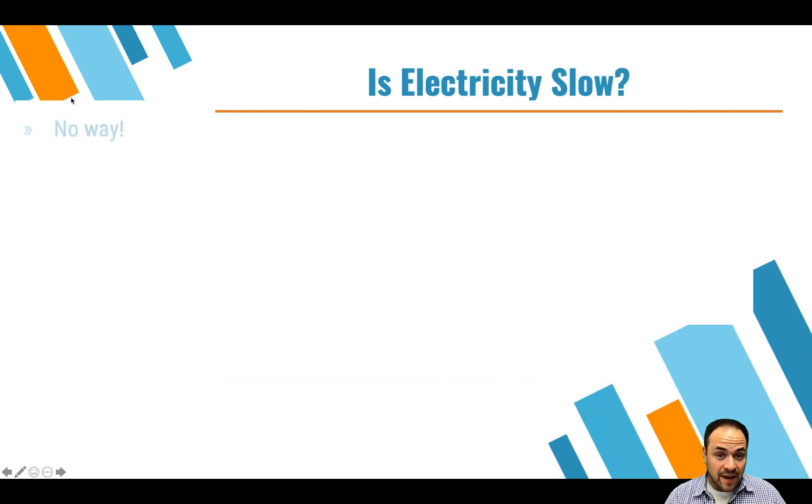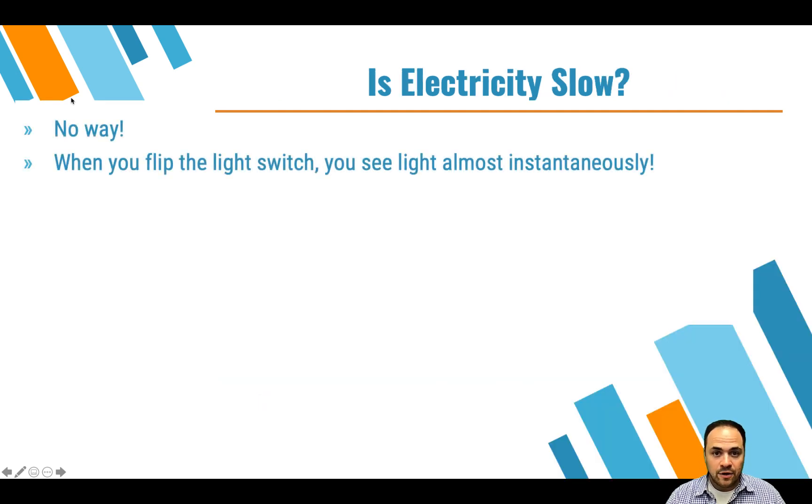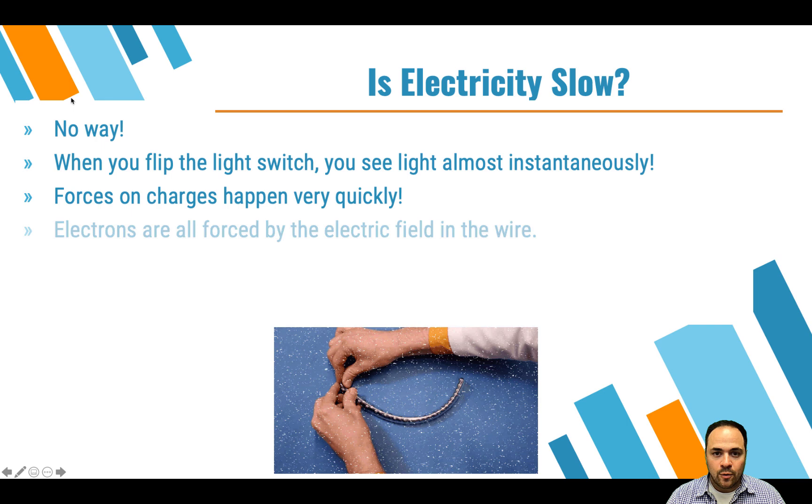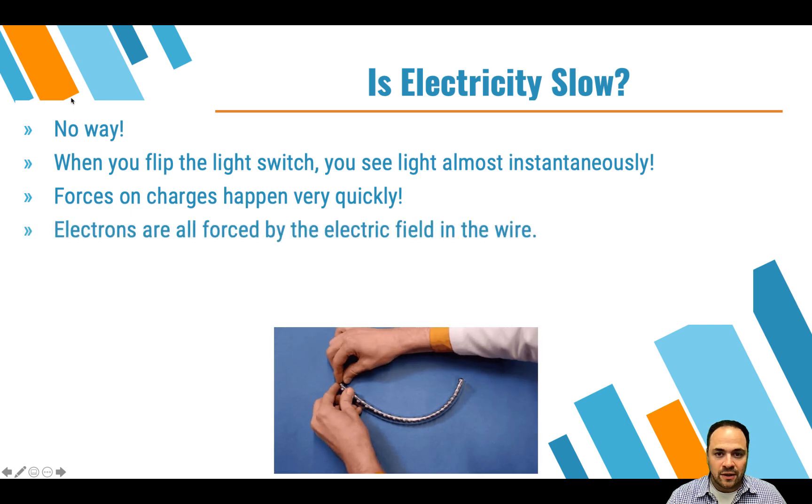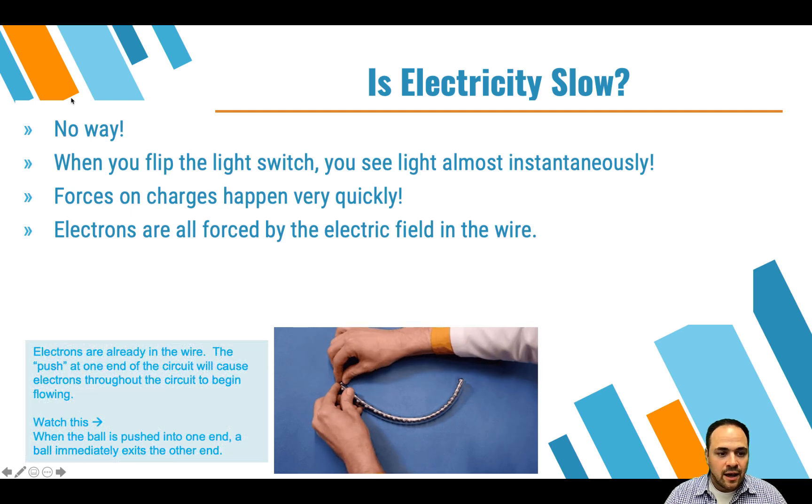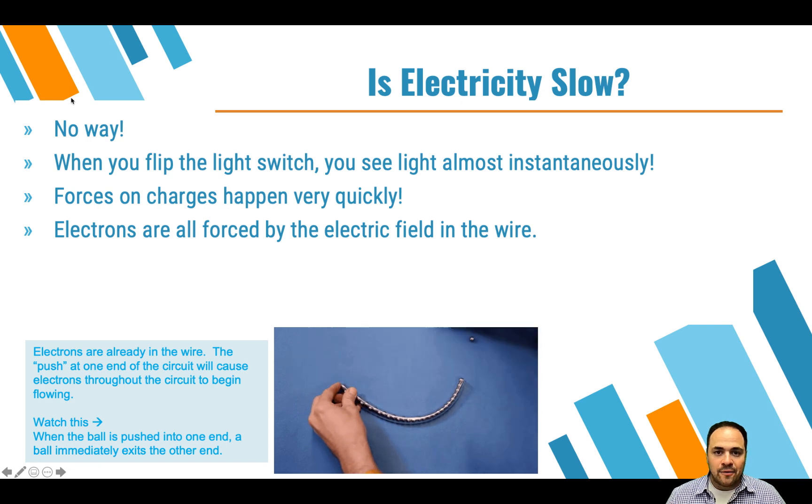Now, is electricity slow? And the answer is absolutely not. Like when you flip a switch, you pretty much instantly see light turn on. Forces on charges happen very quickly. As soon as you flip that switch, an electric field is in that wire, in that circuit, acting on all of the charge in that circuit. And so those actions happen very quickly.